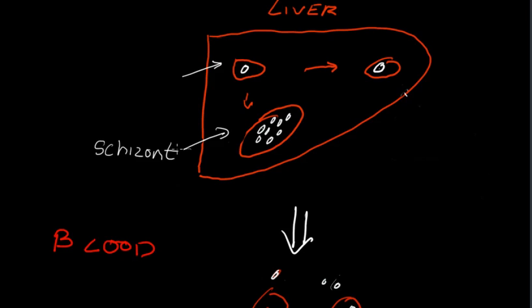A liver schizont in particular. And what that contains is thousands of copies of what are known as merozoites later on in the system. It tends to take around five to seven days for that to occur.